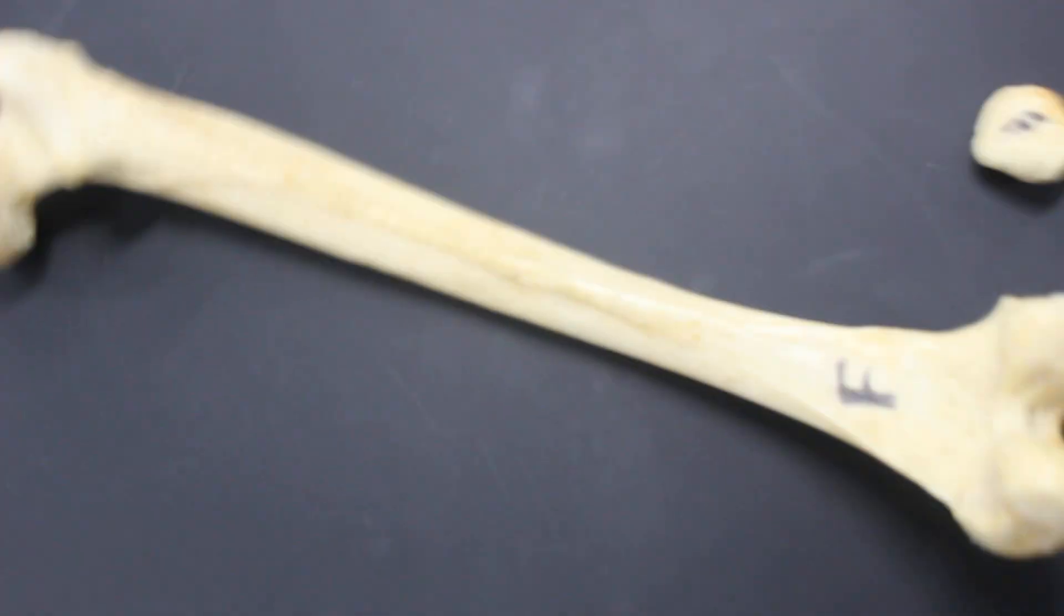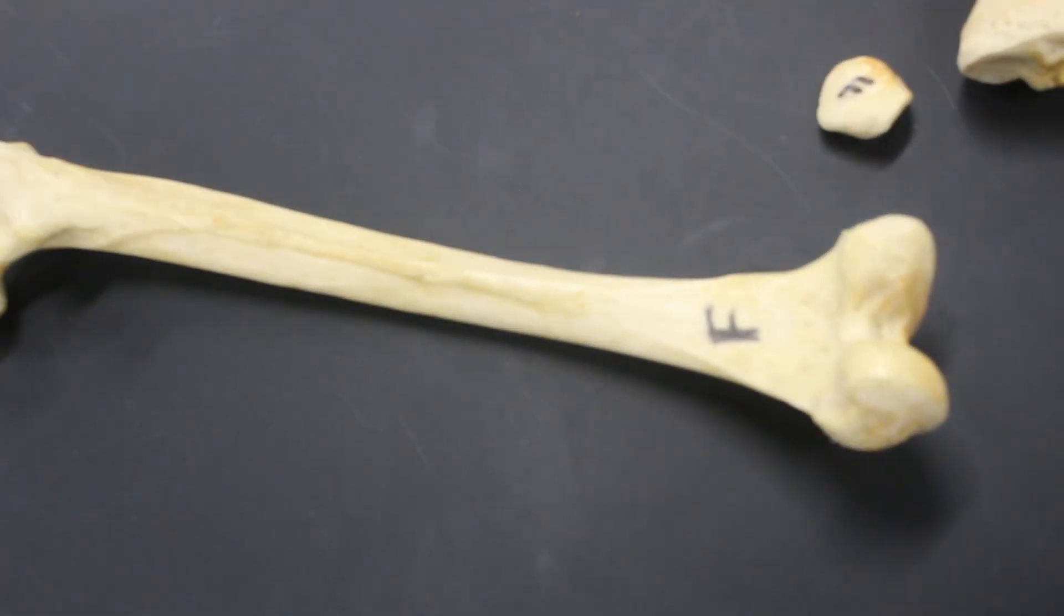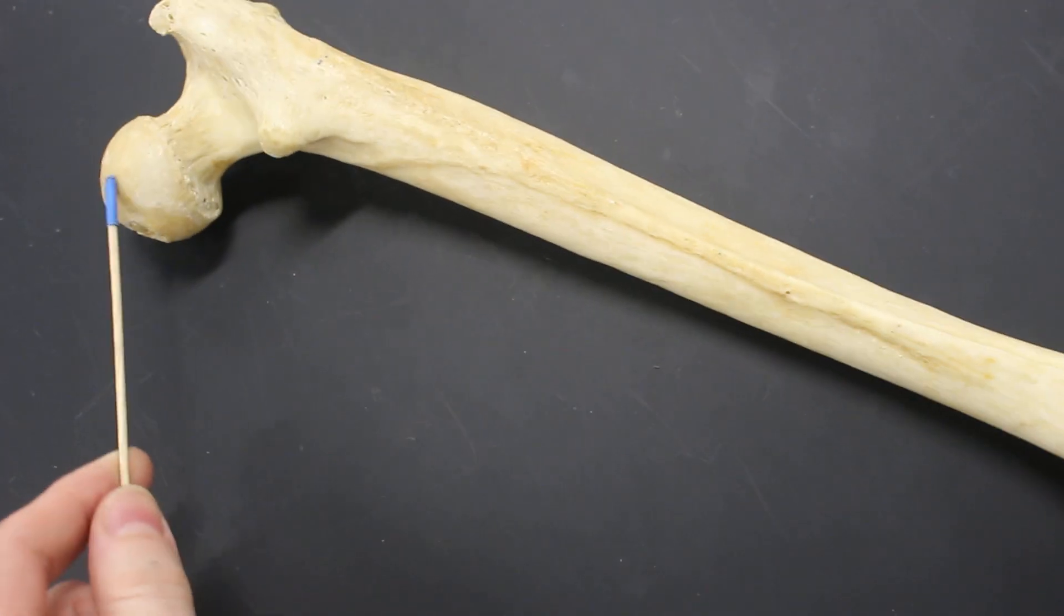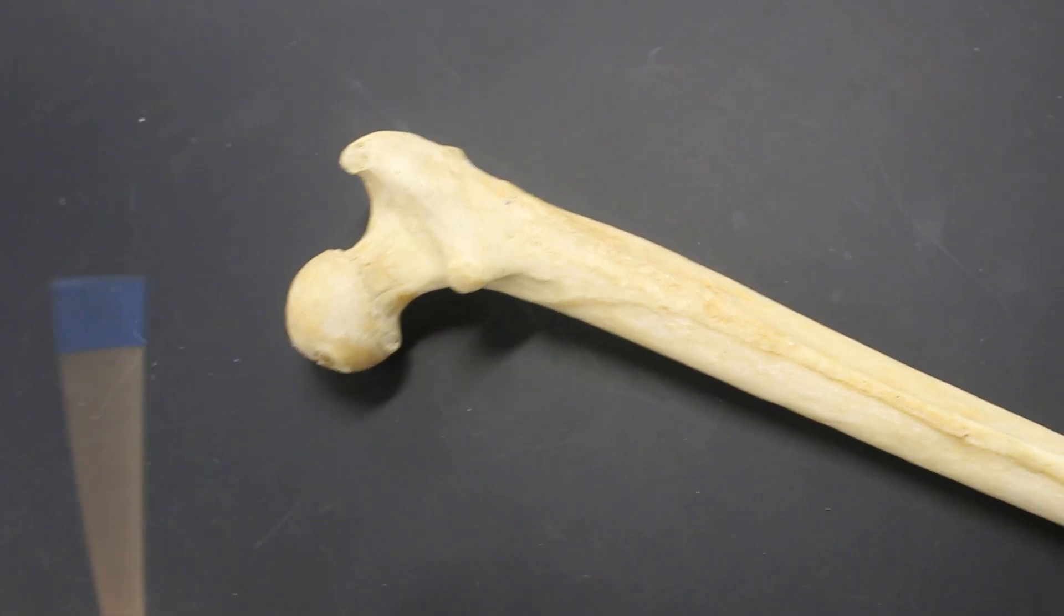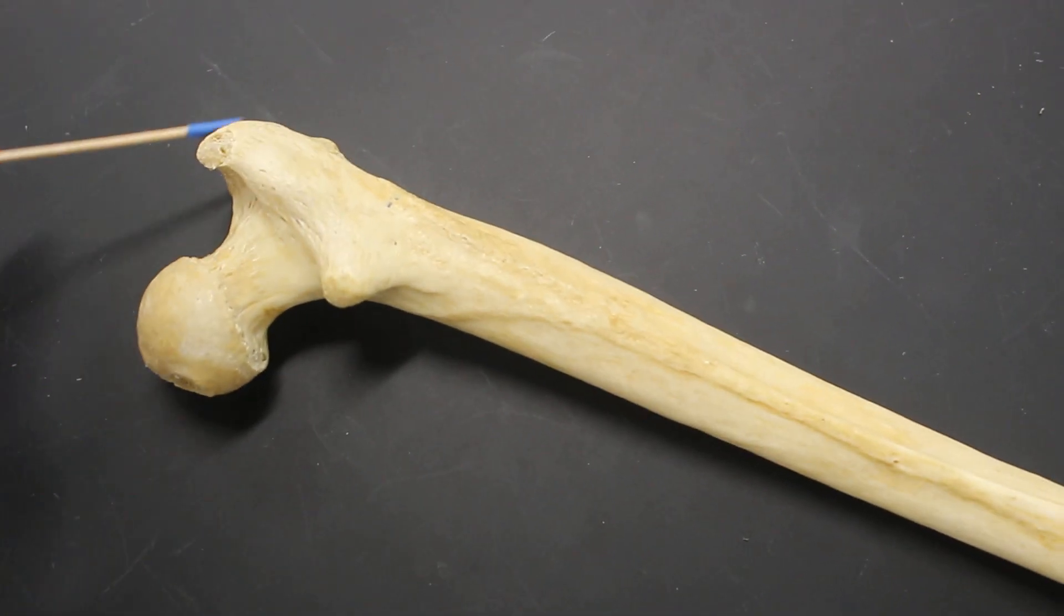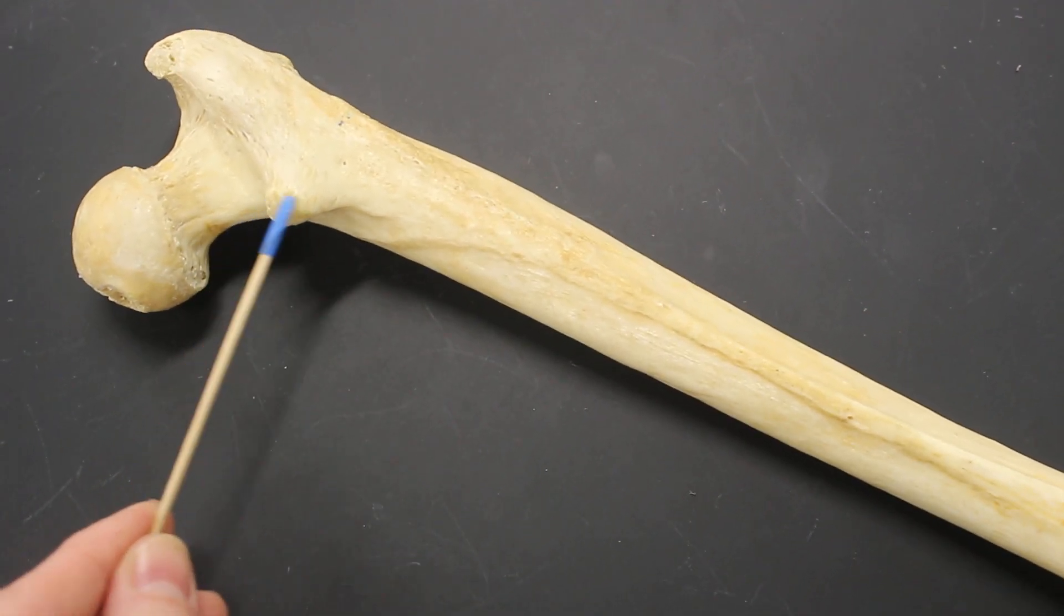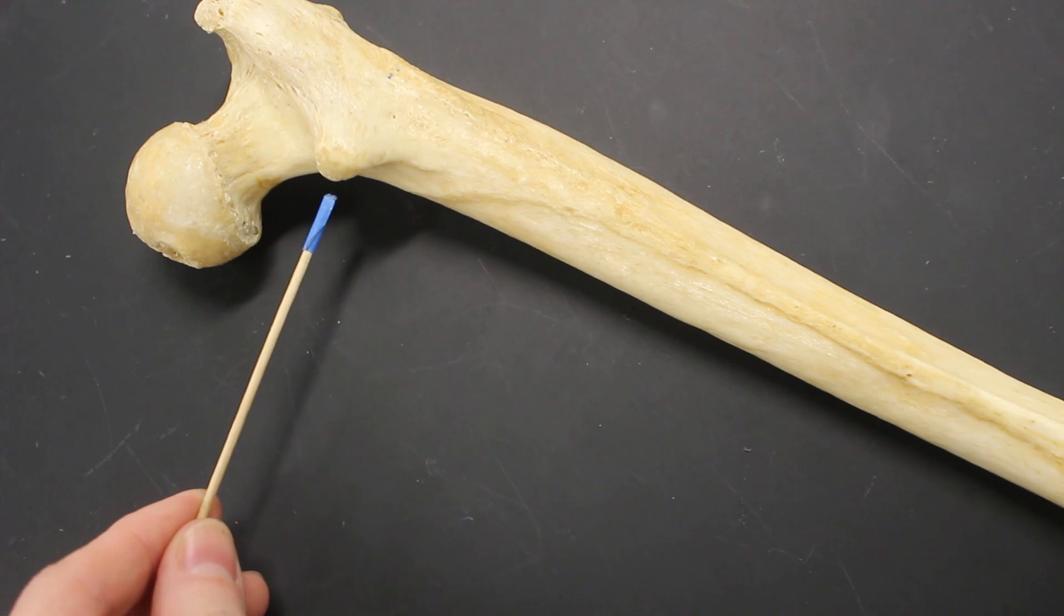This then brings us to the femur, or thigh bone. On the femur we have this rounded portion at the proximal end called the head. We have this very large portion up here that is the greater trochanter. And then down here, the smaller bump, is the lesser trochanter.